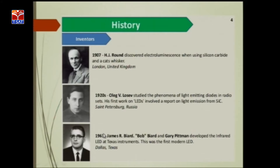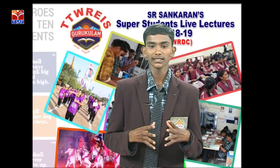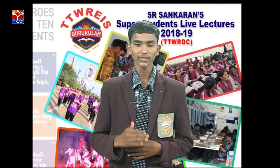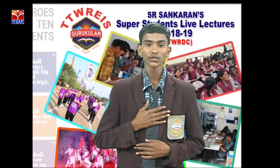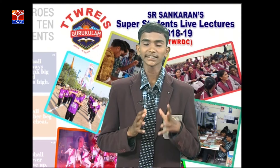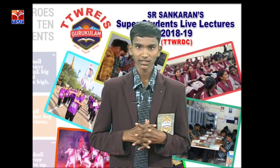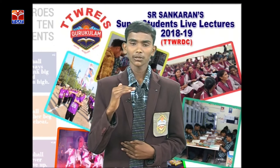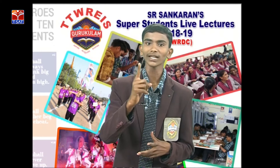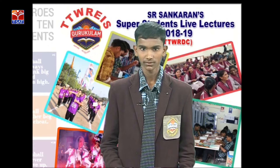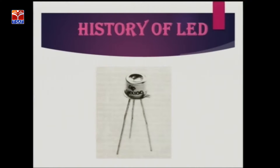In the year of 1961, James R. Biard, Bob Blatt, and Gary Pittman developed the infrared LED at Texas Instruments — the first modern LED. They worked at the Texas Instruments Marconi lab. From 1907 to 1962, they sacrificed their whole lives for our welfare. In the year of 1962, November, a commercial LED came into force, providing maximum light with minimum energy. The first LED model was the SNX-100, containing a hemispherical structure using gallium arsenide semiconductor materials.